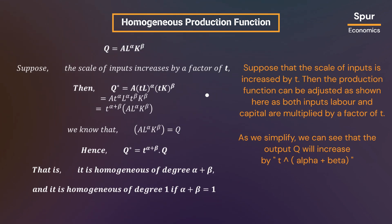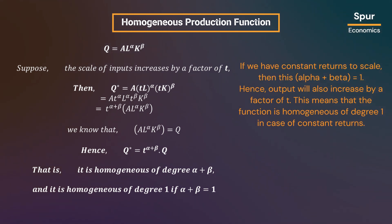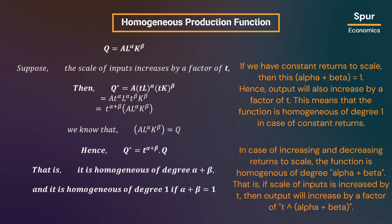Suppose that the scale of inputs is increased by a factor of t. Then the production function can be adjusted as shown here. As both inputs — labor and capital — are multiplied by a factor of t, we can see that the output Q will increase by t raised to the power alpha plus beta. If we have constant returns to scale, then alpha plus beta equals one, so output will also increase by a factor of t, meaning the function is homogeneous of degree one. In case of increasing and decreasing returns to scale, the function is homogeneous of degree alpha plus beta — that is, if scale of inputs is increased by t, then output will increase by t raised to the power alpha plus beta.